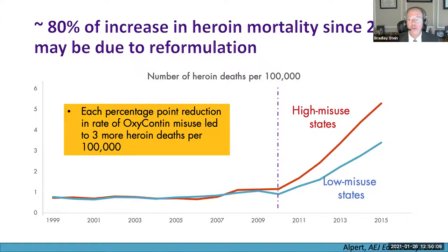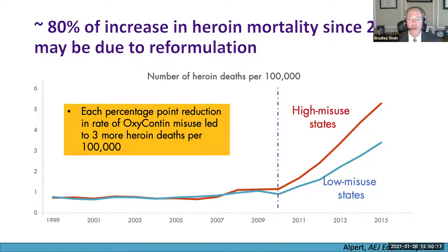This was a well-intentioned, well-meaning policy change that actually resulted in negative unintended consequences. Subsequent work by this group suggests the changes also led to increases in hepatitis C rates. This is an example of thinking about policy in the opioid analgesic domain without considering the illicit markets. Had this been considered in advance, pairing the reformulation with expanded clean syringe access, more naloxone availability, and treatment awareness campaigns could have decreased the shift to heroin.